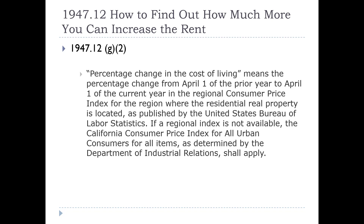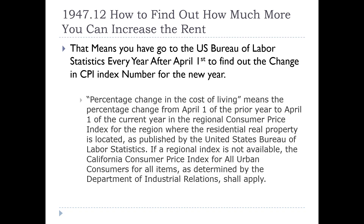The Bureau of Labor Statistics posts statistical information for changes in cost of living known as the CPI index, and they do it for major metros. In California there are five. If your property is not in a region where the Bureau of Labor Statistics supplies the index, code section 1947.12 states that you have to look at the California consumer price index for all urban consumers for all items as determined by the Department of Industrial Relations. They don't produce a percentage — it's actually numbers, and you have to do math.